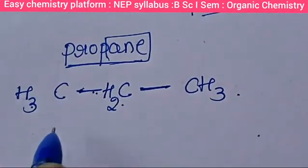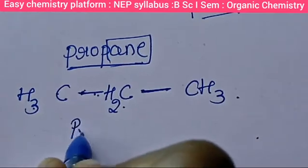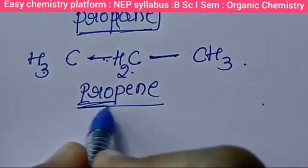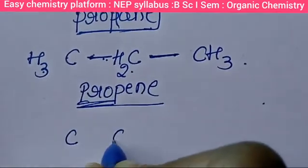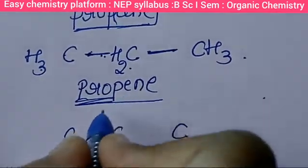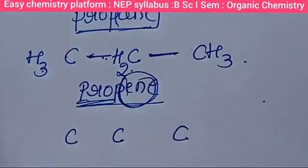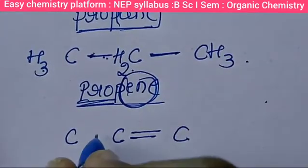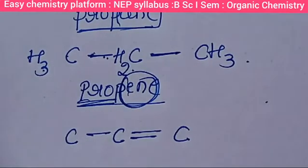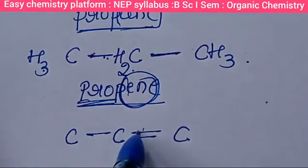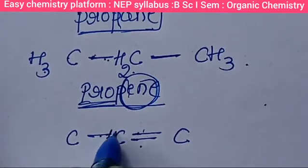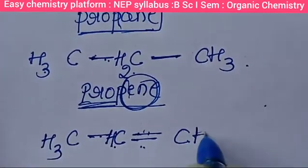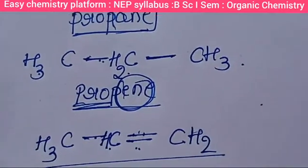Now let's look at propane. Prop means three carbon atoms and -ane means single bond. We have three carbons in a chain with single bonds. Using CnH2n+2: 3×2+2 = 8. So propane is C3H8. Next is propene — three carbon atoms with a double bond.